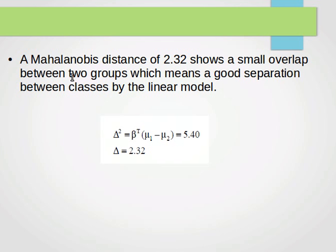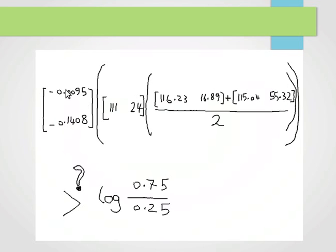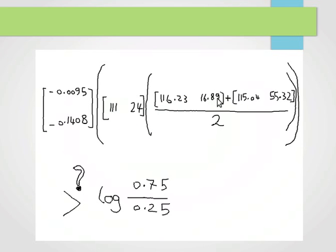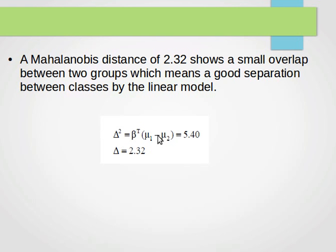The last thing here is we can compute the Mahalanobis distance. Delta square equals the transpose of the beta vector times mu1 minus mu2. We just plug the values in, so it's this vector, the transpose of the beta vector, and this vector. We need to subtract rather than add, and we end up with delta square 5.40.